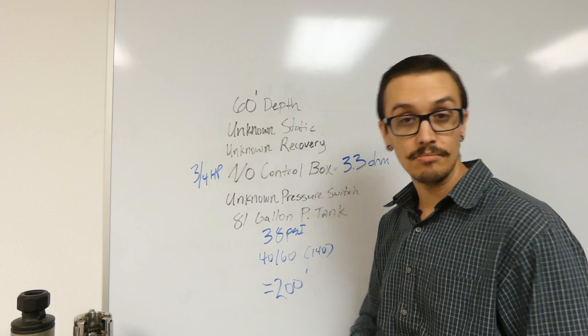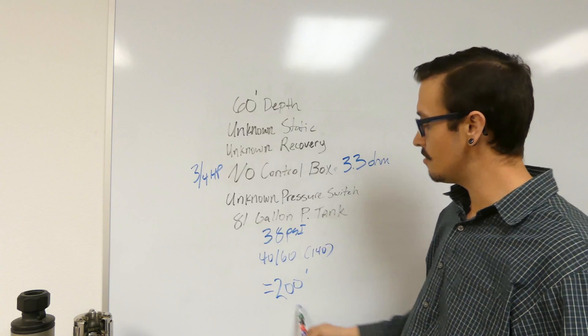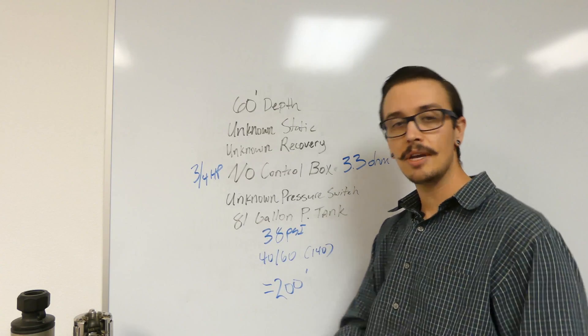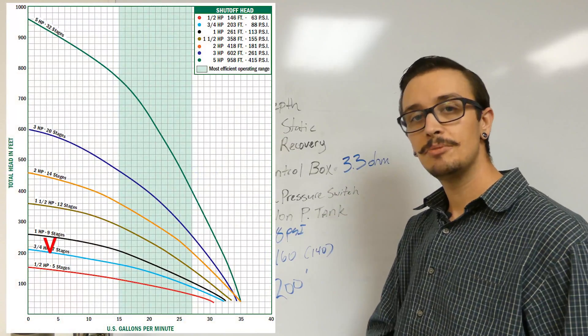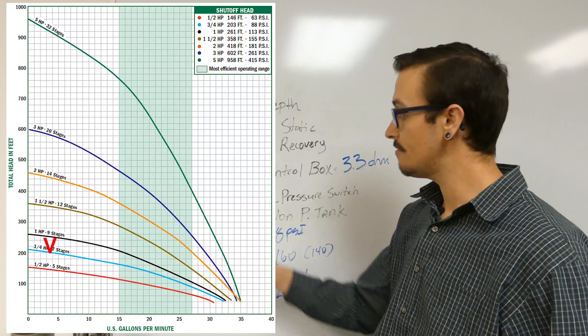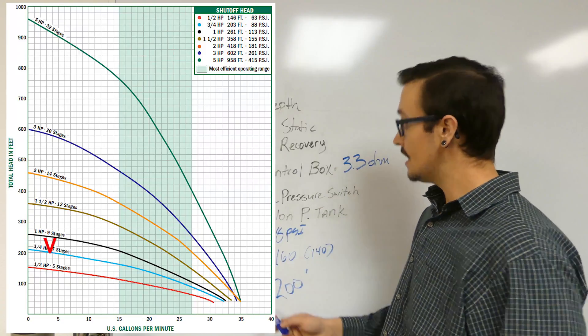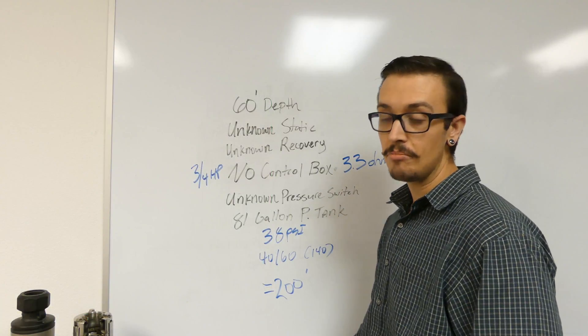Or maybe not. So anyways, let's work this out just a little bit farther. We know 200 feet, three-quarter horsepower. We're looking at the 20 gallon minute pump curve. You can see on this pump curve it is a dead miss if our static, if we actually need to pump at the pump level which is 60 feet deep. This pump is a dead miss if we're trying to get up to 60 PSI.